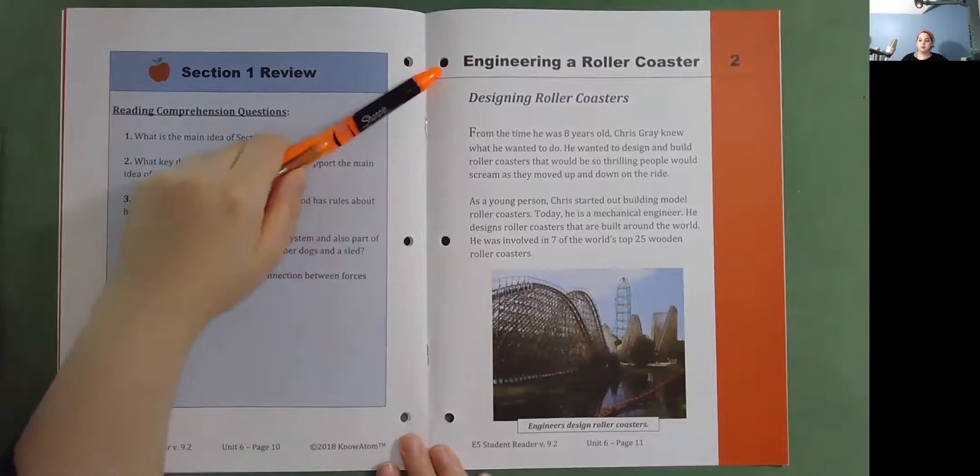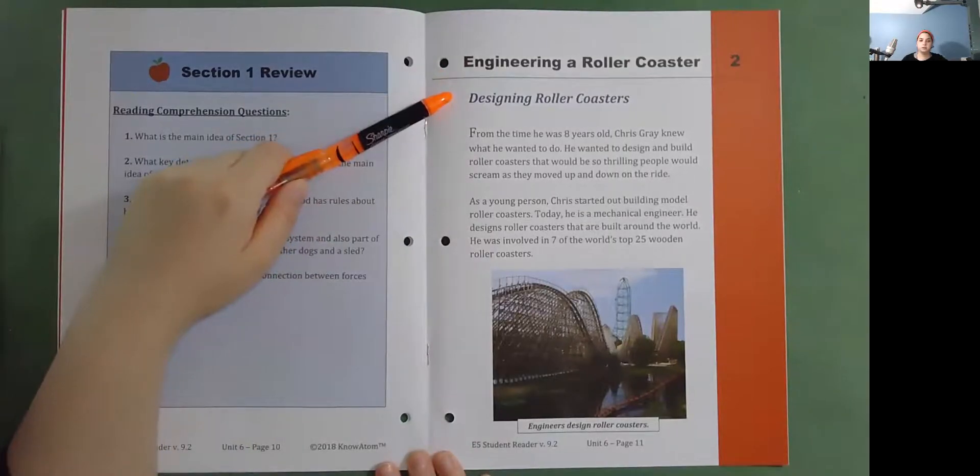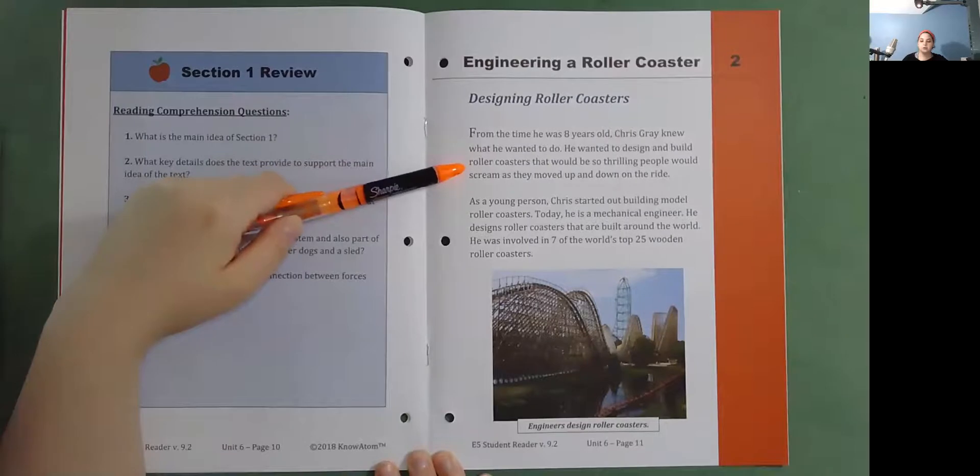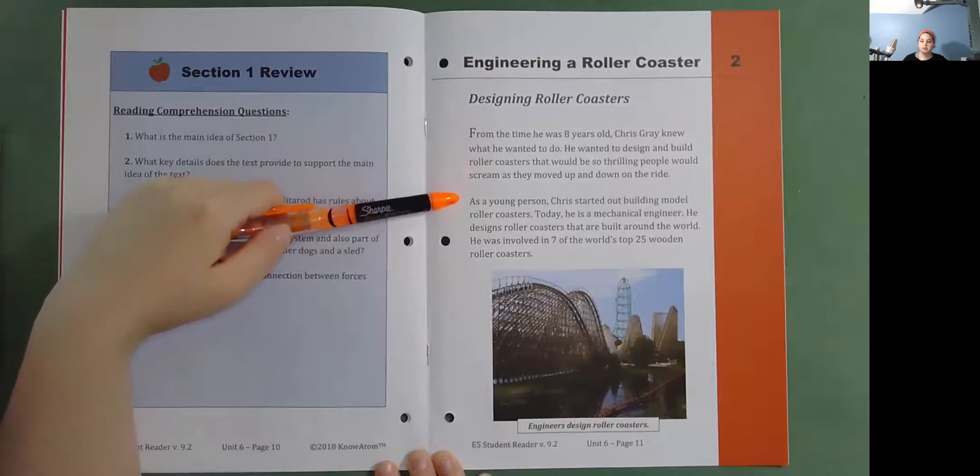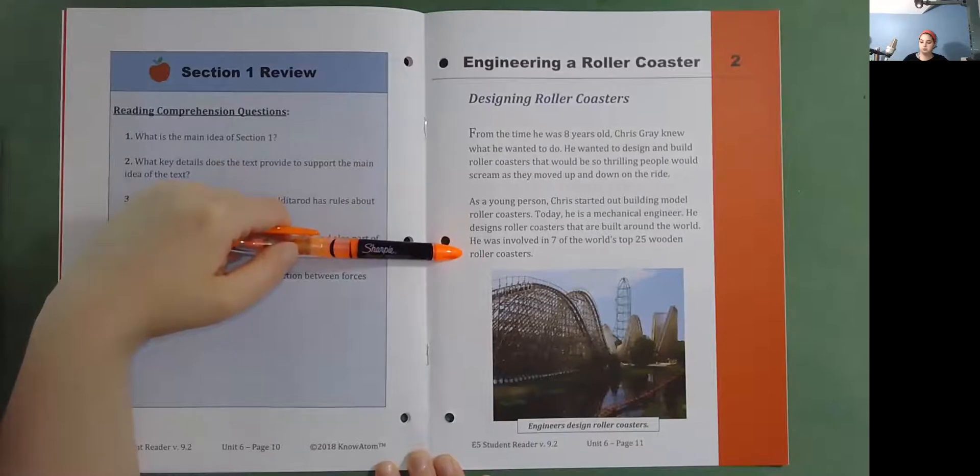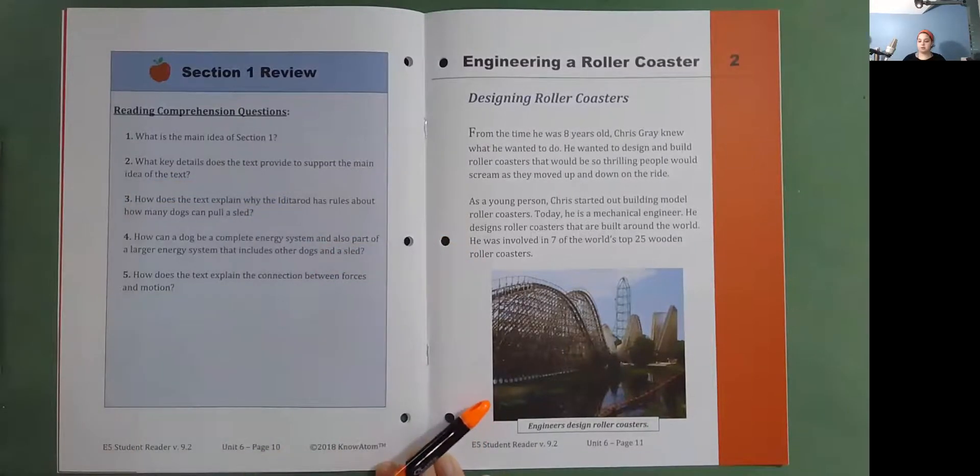Engineering a roller coaster. Designing roller coasters. From the time he was eight years old, Chris Gray knew what he wanted to do. He wanted to design and build roller coasters that would be so thrilling, people would scream as they moved up and down on the ride. As a young person, Chris started out building model roller coasters. Today, he is a mechanical engineer. He designs roller coasters that are built around the world. He was involved in seven of the world's top 25 wooden roller coasters. Engineers design roller coasters.